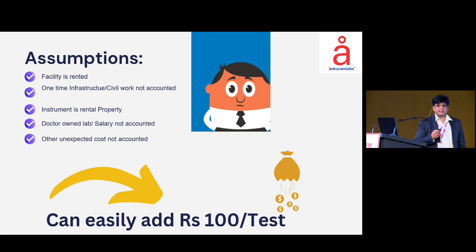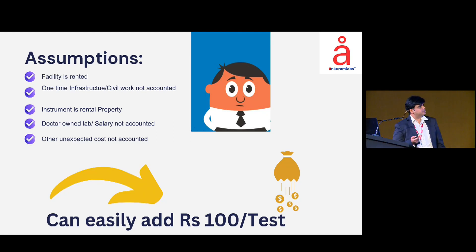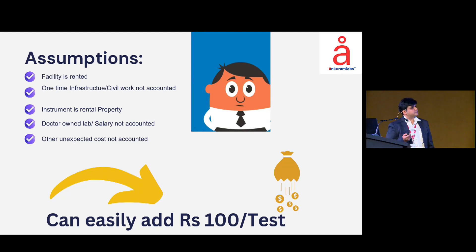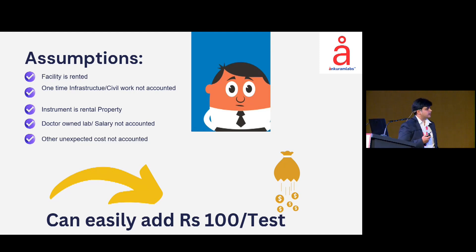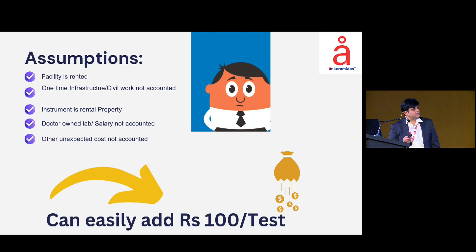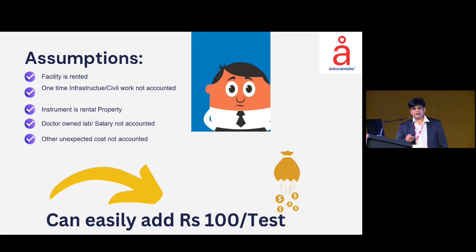But this is a simplified calculation made with some assumptions. The facility is rented and not owned. One-time infrastructure and civil work costs were not accounted for. The instrument is rental. Because it is a doctor-owned small lab, the doctor's own salary is not accounted for. Other unexpected costs are also not accounted. If you account for all these additional factors, it can easily add another 100 rupees to that earlier 100 rupees.